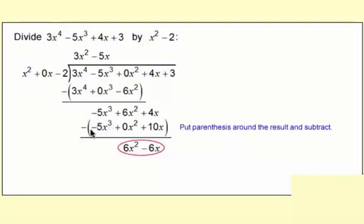Next, parentheses and subtract. And you can see here that we have -5x³ - (-5x³). That's 0. And we have 6x² - 0x², so that's simply 6x². And then we have 4x - 10x, which is -6x.